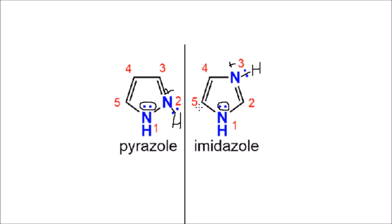In both compounds, adding hydrogen to the basic nitrogen doesn't break the aromaticity, so this alone doesn't help us determine which one is more basic. What you need to do is draw the resonance structures of the conjugate acid of both imidazole and pyrazole. I've already drawn them, and they both have five resonance structures. Since they have the same number, that doesn't help us either — so let's compare the resonance structures directly.